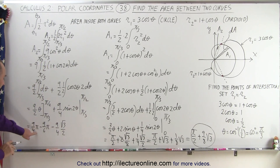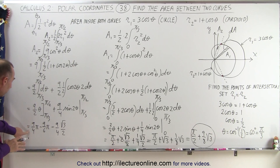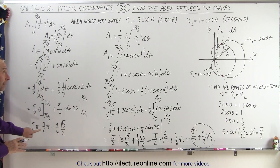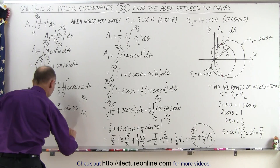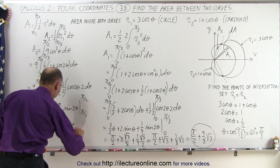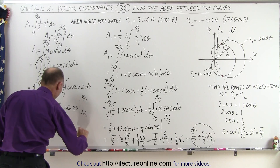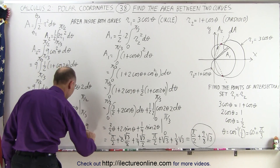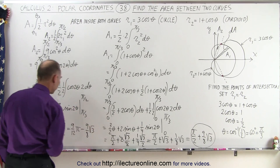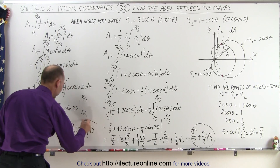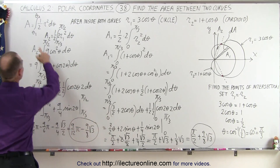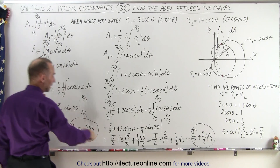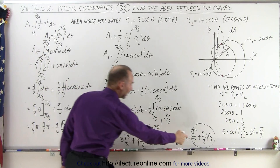Combining those terms with a common denominator of 12: 27/12 minus 18/12 equals 9/12. So A2 equals (9/12)π minus (9/8)√3. We now have both A1 and A2.